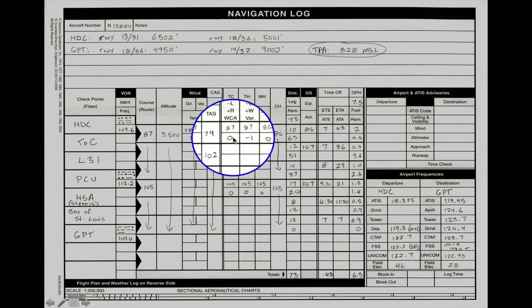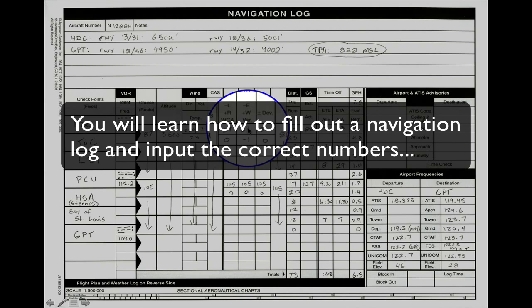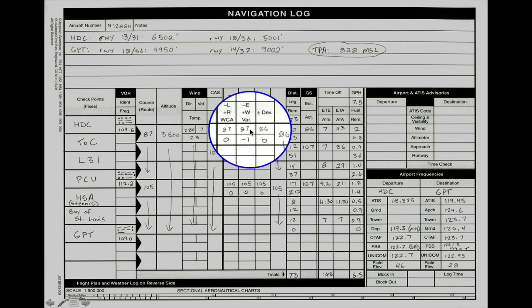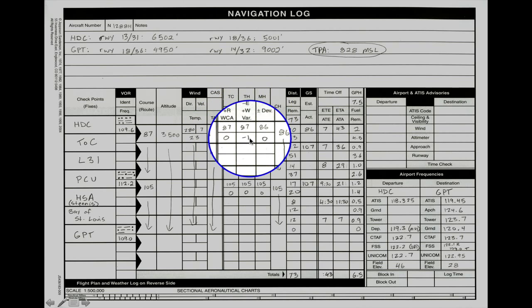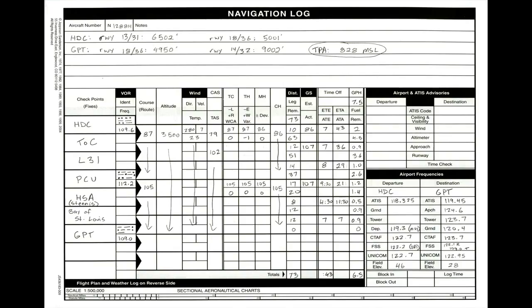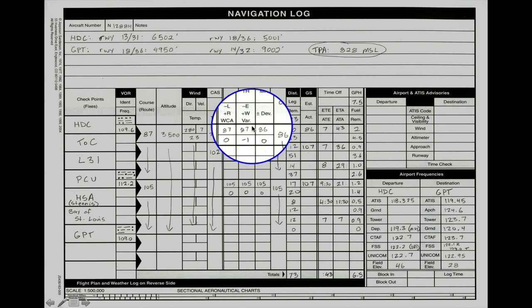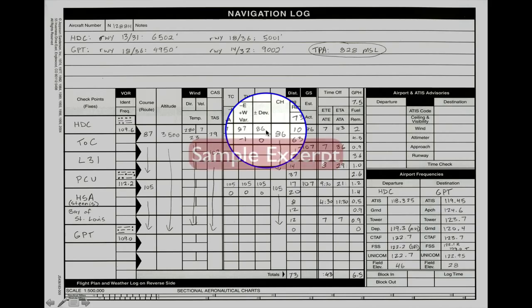Take your true course, plus or minus your wind correction angle, and that yields the true heading. You can look at that formula on your E6B as well. In this case, the true heading is still 87, because 87 plus 0 is 87. The magnetic variance is minus 1 — that's the isogonic line. This person is flying very close to the agonic line where there's almost no difference. Since it's 1 degree east and east is least, we subtract: 87 minus 1 yields 86. That's our magnetic heading, noted as MH.